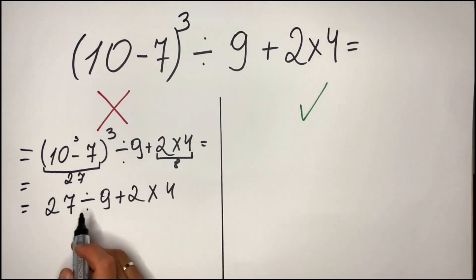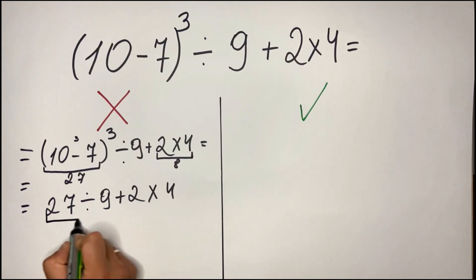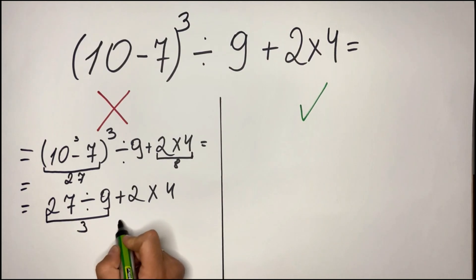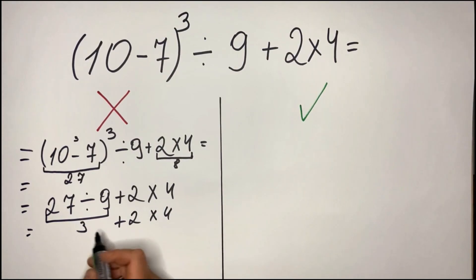So they take 27 divided by this, so they take this which is 3, then they have plus 2 multiplied by 4. So what does it mean? Instead of doing the multiplication to follow the order of operation, most people are doing the addition without following the order of operation.